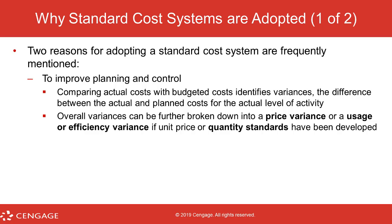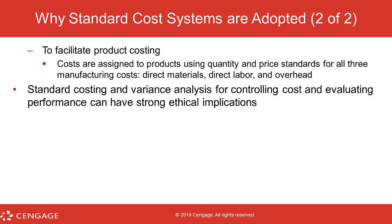Why do we need to use a standard costing system? The answer is to improve planning and control, just the same way budgeting helps us with planning and control. Standard costing lets us compare actual costs with budget costs to identify any variances — the difference between actual and planned costs for the actual level of activity. Overall variances can be further broken down into a price variance or a usage/efficiency variance if unit price or quantity standards have been developed. Costs are assigned to products using the quantity and price standards for all three manufacturing costs: direct materials, direct labor, and overhead.